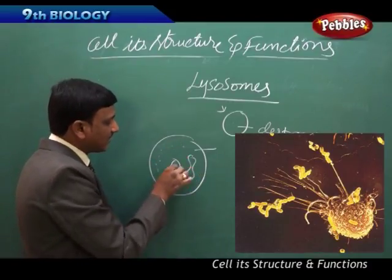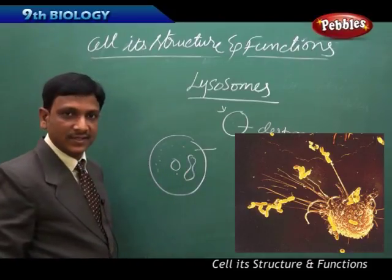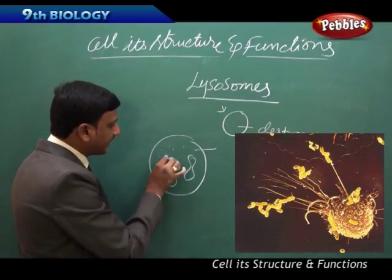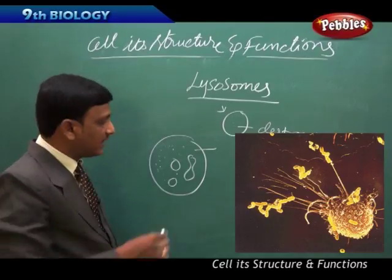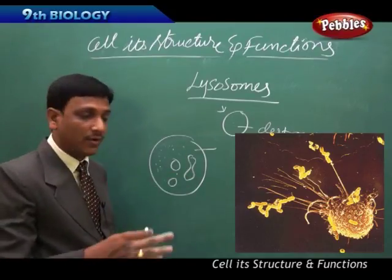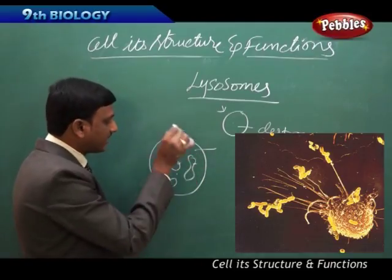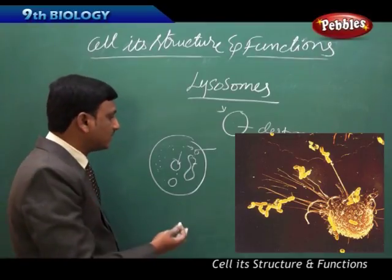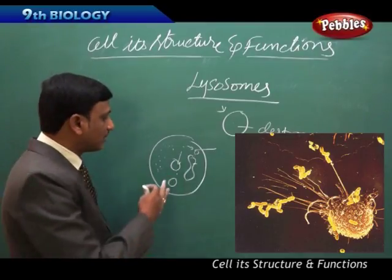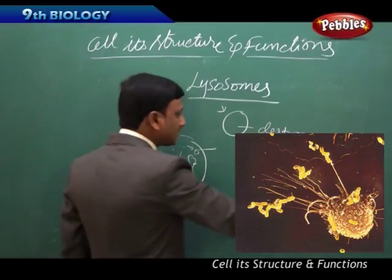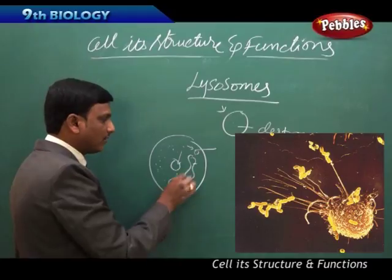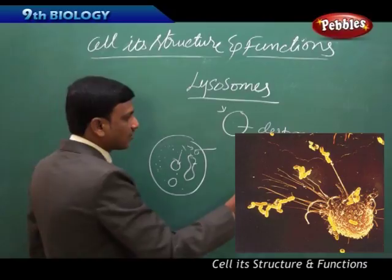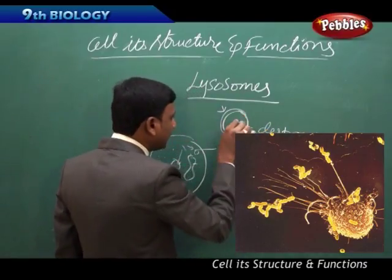Nothing happens to the cell organelles when the cell is in a living state — so it was a mystery. Later they found that these destroying enzymes are not directly present in the cytoplasm. If they were directly in the cytoplasm, they could come in contact with mitochondria, the nucleus, and other organelles and digest them, and the cell would die. That is not happening because these destroying enzymes are not openly found in the cytoplasm. They are packed up safely in lysosomes.